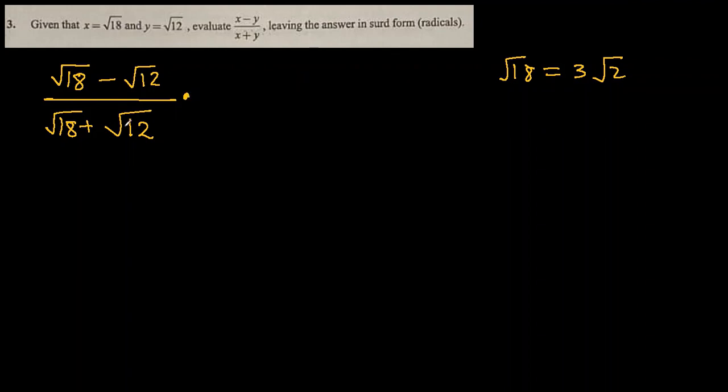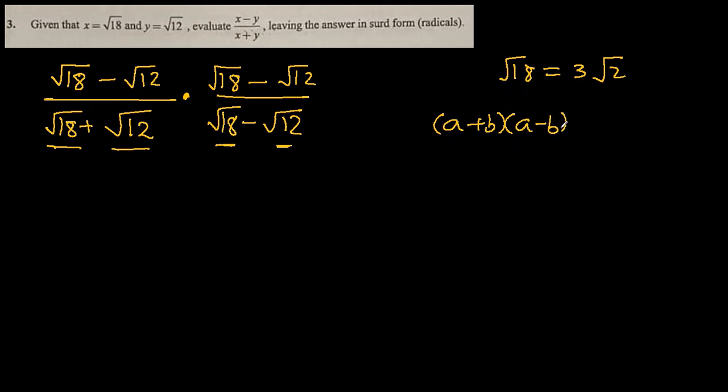So I will rationalize the denominator of this by multiplying by square root 18 minus square root 12, square root 18 minus square root 12, which is conjugate of the denominator. Okay, so this is a plus b multiplied by a minus b format. The identity for a plus b multiplied by a minus b is a square minus b square.